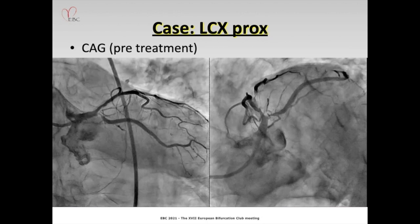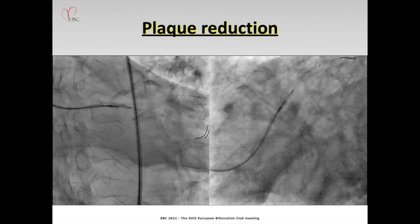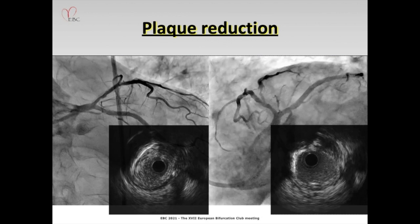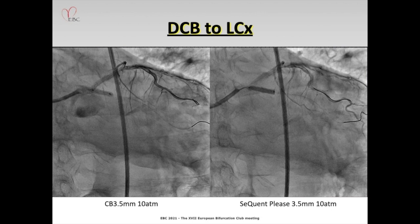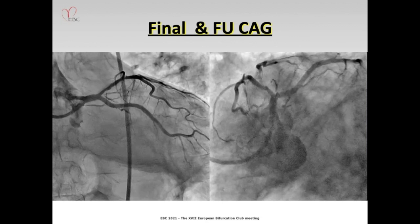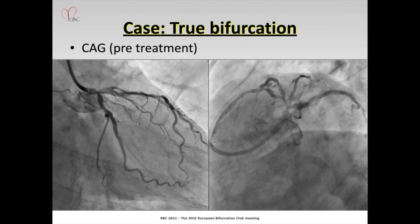Let me show my case. This patient had severe stenosis in proximal circumflex and mild stenosis in proximal LAD. To avoid compromise of the LAD, I performed directional atherectomy to the circumflex. After atherectomy, angio and IVUS image looked pretty good. I then dilated the proximal circumflex with a cutting balloon and DCB. Final angiogram showed good result. One year later, there was no restenosis.